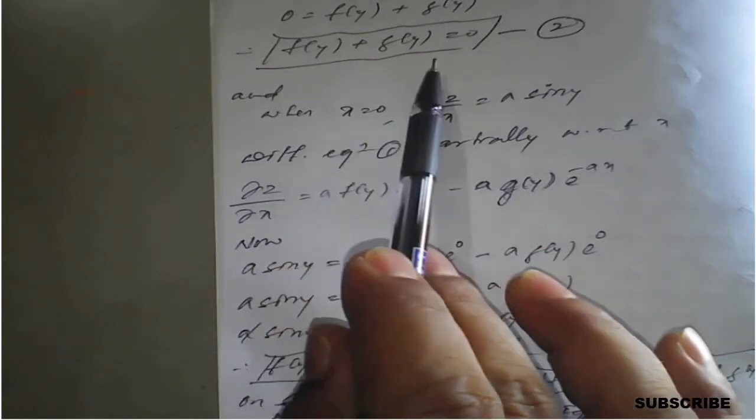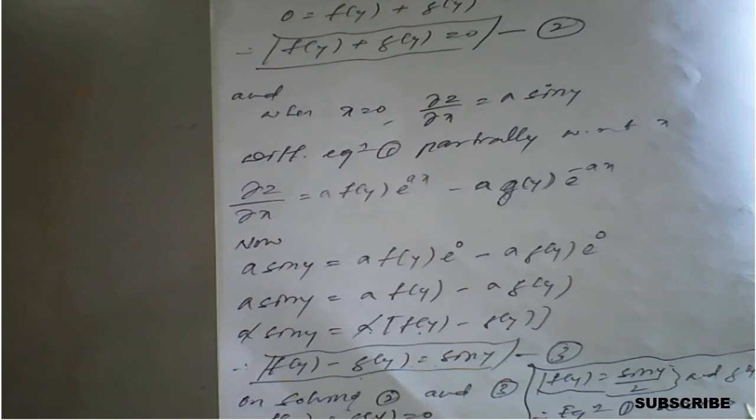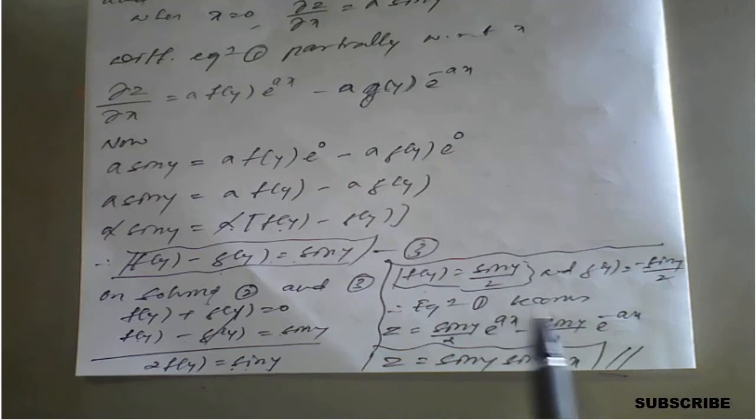Solve equations two and three simultaneously: f(y) + g(y) = 0 and f(y) − g(y) = sin(y). Adding them: 2·f(y) = sin(y), so f(y) = sin(y)/2. Substituting back into equation two gives g(y) = −sin(y)/2.